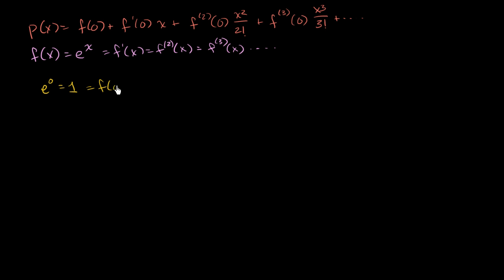And so this is going to be equal to f of 0. This is going to be equal to f prime of 0. It's going to be equal to any of the derivatives evaluated at 0, the nth derivative evaluated at 0.